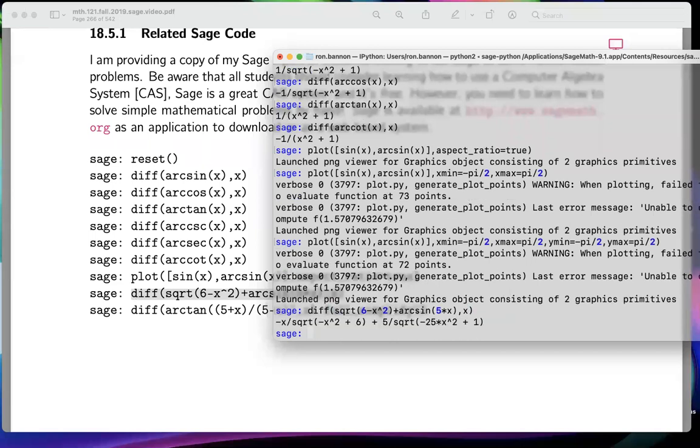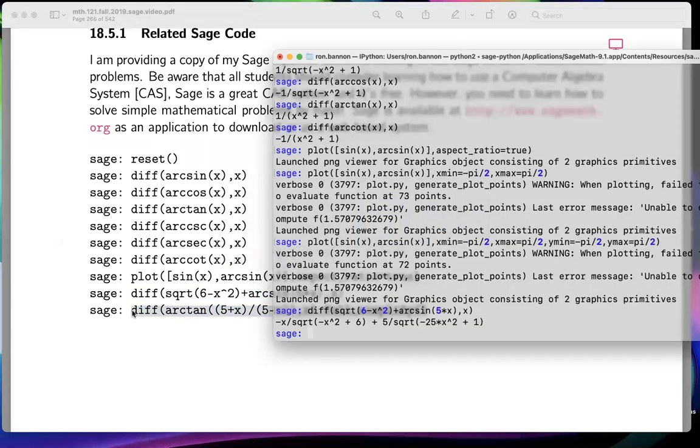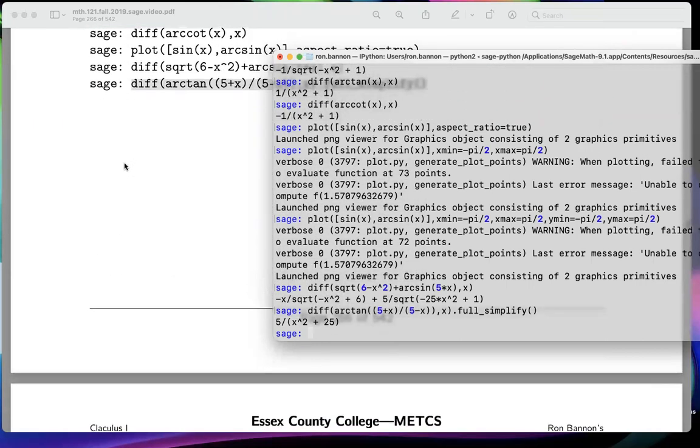What is that? It takes a derivative of a function f of x equals the square root of six minus x squared plus the arc sine of five x with respect to x. And I want to maybe do this one over here and that's full simplify. I think in the past we've been only using simplify, now it's full simplify. And if I do full simplify, let's take a look, you get this over here.